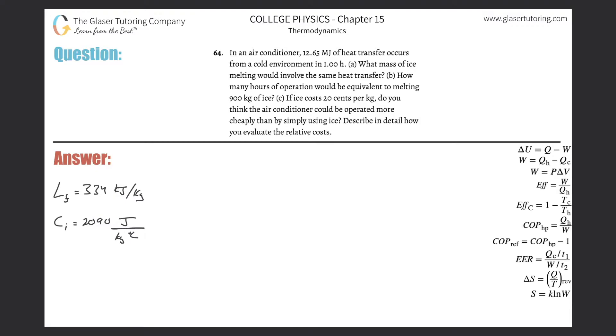Number 64, in an air conditioner, 12.65 megajoules of heat transfer occurs from a cold environment in one hour. Letter A, what mass of ice melting would involve the same heat transfer?